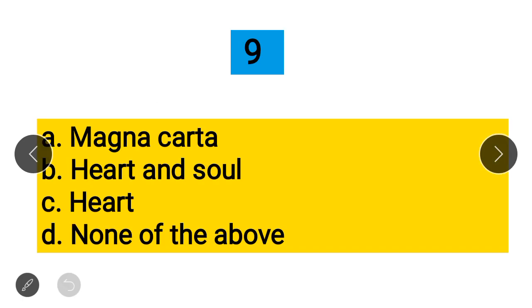Question 9: Part 3 of the Indian Constitution is known as? Option A: Magna Carta, Option B: Heart and Soul of the Indian Constitution, Option C: Heart, Option D: None of the above. The correct answer is that Part 3 is the Magna Carta of India.